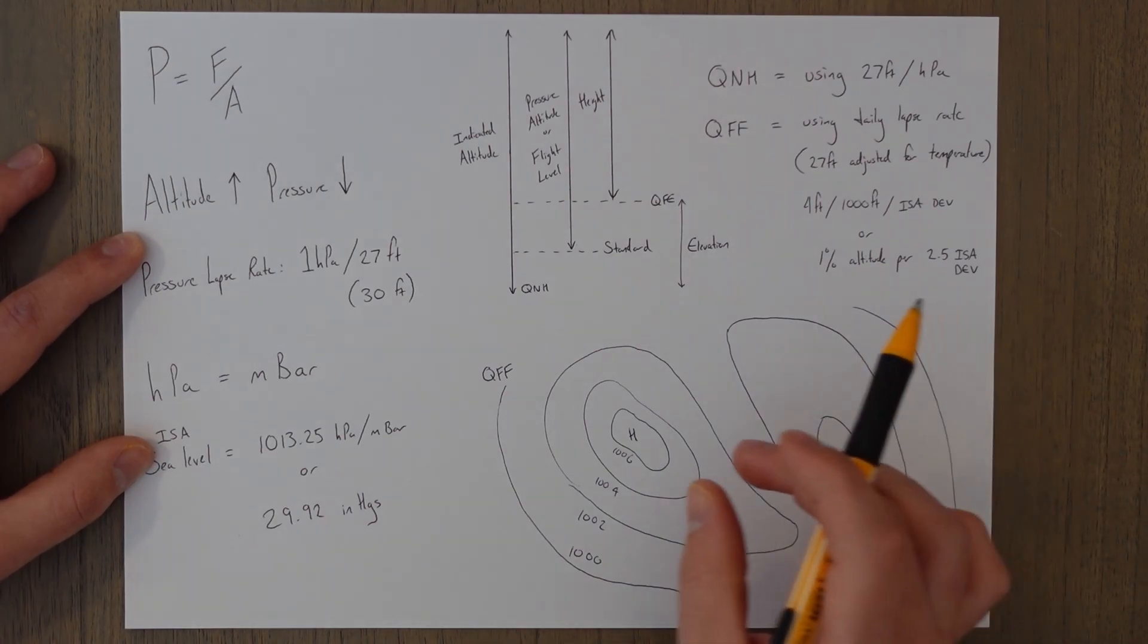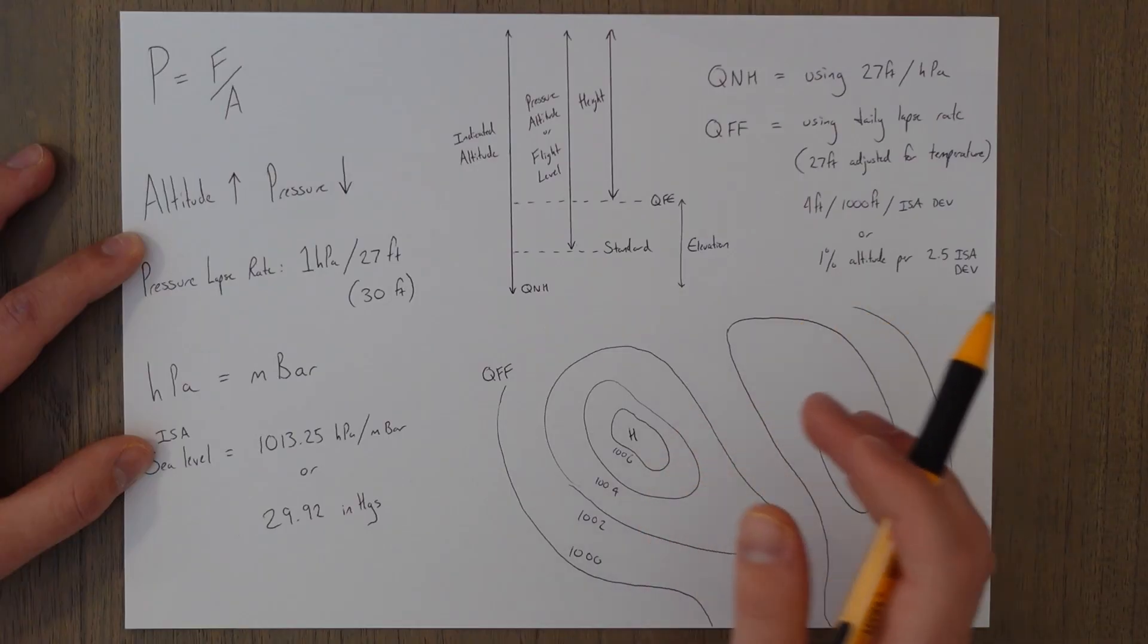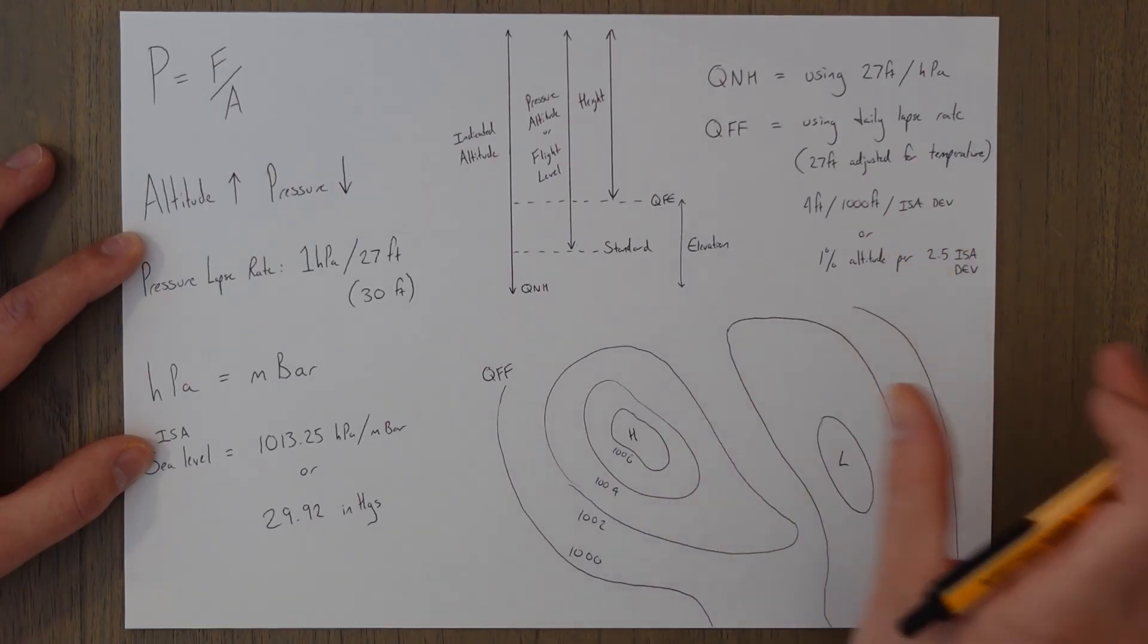But just a quick sneak peek: if the isobars are really close together it means it's gonna be a lot more windy than if they're quite spread apart.